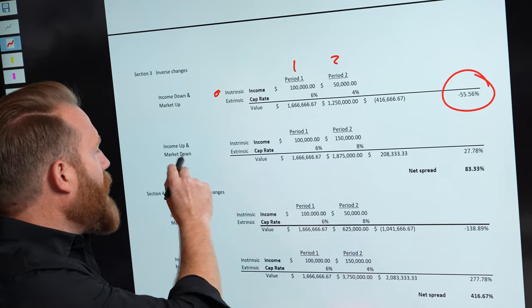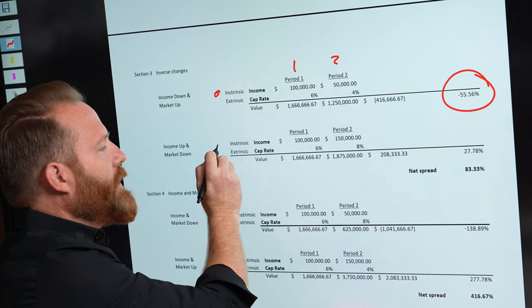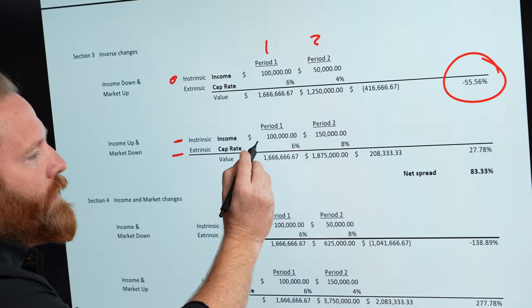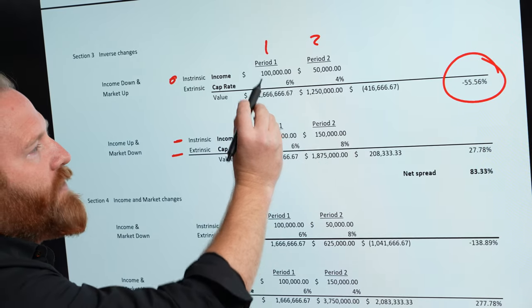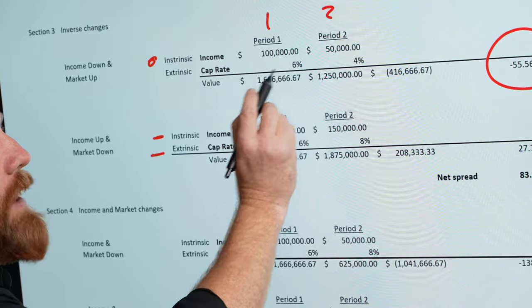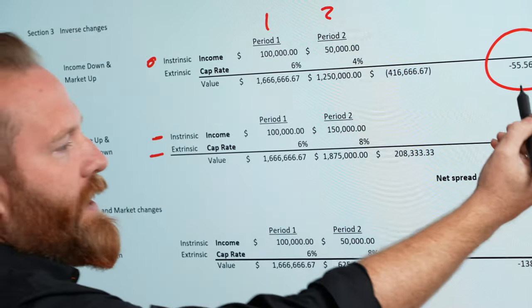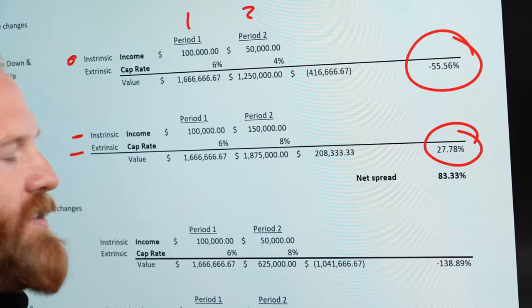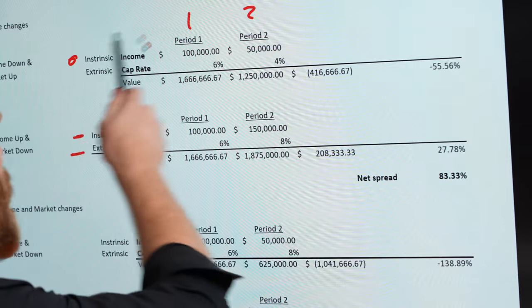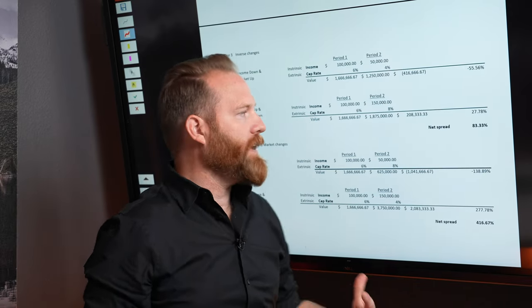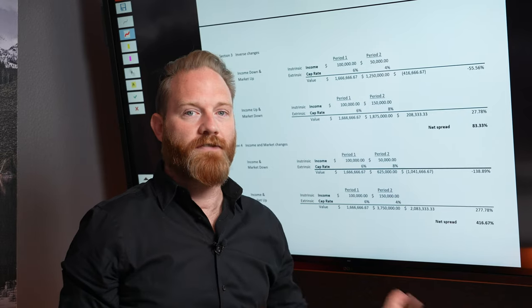This is all things being equal. All we're looking at is the relationship. No other examples, no other stuff, just the relationship. Now income up and market down. So now let's say the income goes up, but the market goes down. Inverse of this. So income goes up by the same amount that it went down in this example, and the market went up the same amount that it went down. It's purely an inverse of the negative 55. We have a positive 27%. This everyone is what is important.